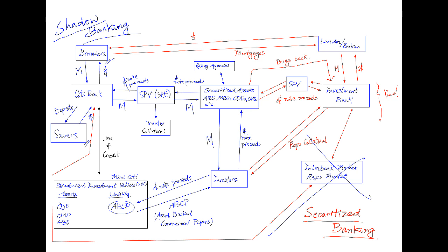Remember, this diagram is only a simplified version of what happened. In truth, these investors consisted of banks from all over the world, so when big banks like Lehman Brothers and Merrill Lynch went down, the whole world was affected. This is the end of my presentation on shadow banking and securitized banking. I hope this helped your understanding of how commercial banks and investment banks operated using these unregulated systems during the GFC. If you have any questions or feedback, please leave a comment in the comment section below — thank you.